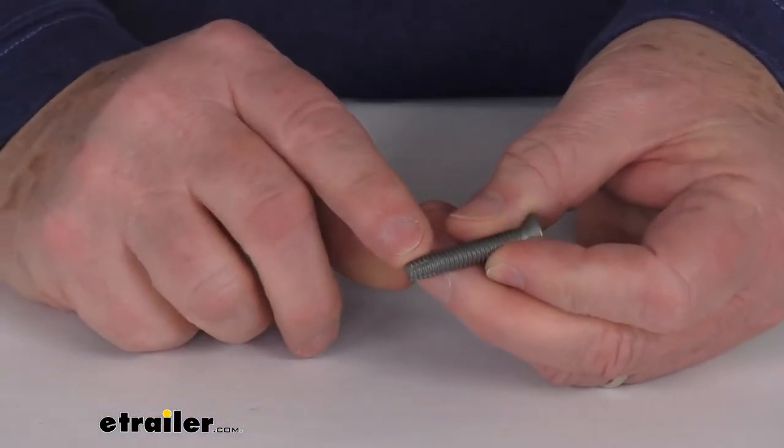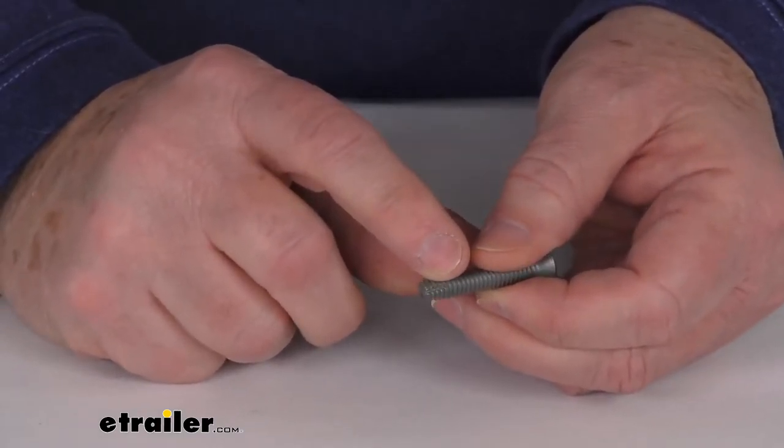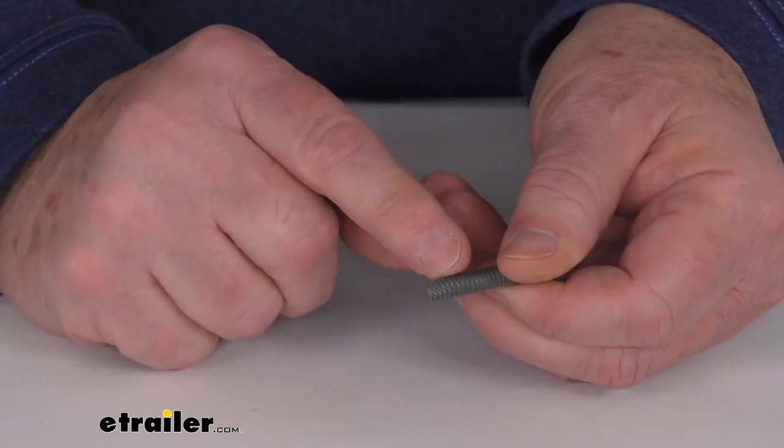As I mentioned earlier, this is a type F point, and what that is, it's a very blunt tip, and if you rotate it you can see that it has multiple cutting surfaces on it.